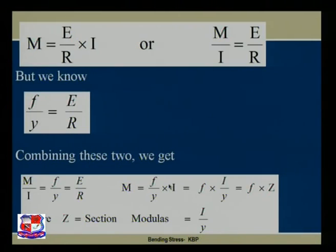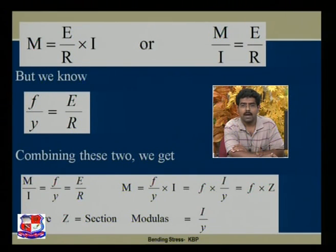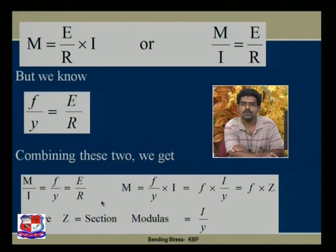It also causes the beam to deflect. Now let us revise the bending equation we have studied. The basic fundamental equation is M/I = f/y = E/R, where M is the external bending moment due to applied loads, I is the moment of inertia of the section, f is the bending stress at a particular location at depth y from the neutral axis, E is Young's modulus, and R is the radius of curvature of the beam.